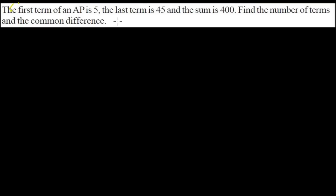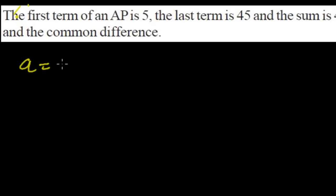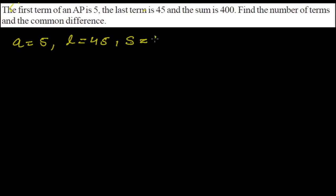Let me write down what we have from the question one by one. The first term a is 5, the last term l is 45, and the sum of n terms S_n equals 400. We need to find the number of terms n and the common difference d.